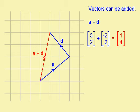If I use the column vectors, I have 3, 2 plus minus 2, 2. Adding these two: 3 plus minus 2 gives me 1, and 2 plus 2 gives me 4. So my resultant vector is 1, 4. And we can see that this is the same as the resultant vector on the diagram: 1, 4.